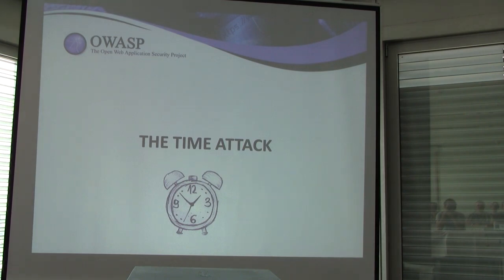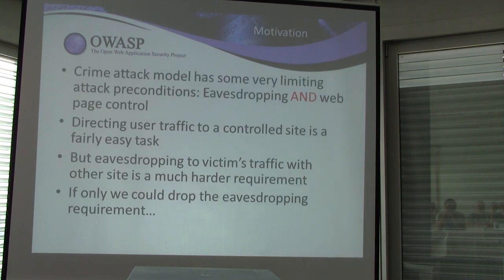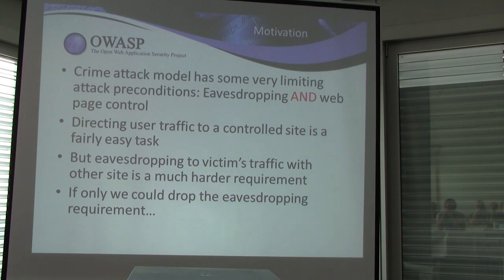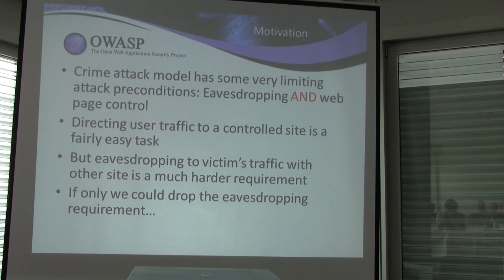Let's move on to our second improvement of CRIME: the TIME attack. As we recall, the CRIME attack model requires the attacker to be both an eavesdropper and have control over the webpage the victim visits. Having control over the webpage is not so hard, but also being able to observe the victim's traffic to another site is a different matter. To be an eavesdropper you usually need physical proximity to your victim — for example, on an unencrypted wireless LAN or by poisoning a local network. This is a rather big limitation, and the attack would be more practical if we could drop it.